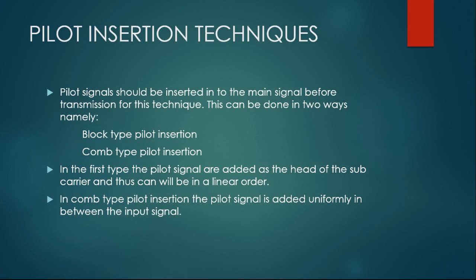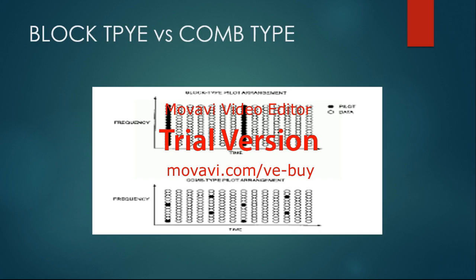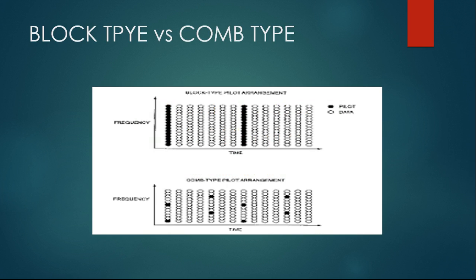To add the pilot signal into the data, there are two different techniques: block-type pilot insertion or comb-type pilot insertion. In the next image you can see the difference between the two. In block-type pilot insertion, you add the pilot signal at the beginning of each subcarrier.